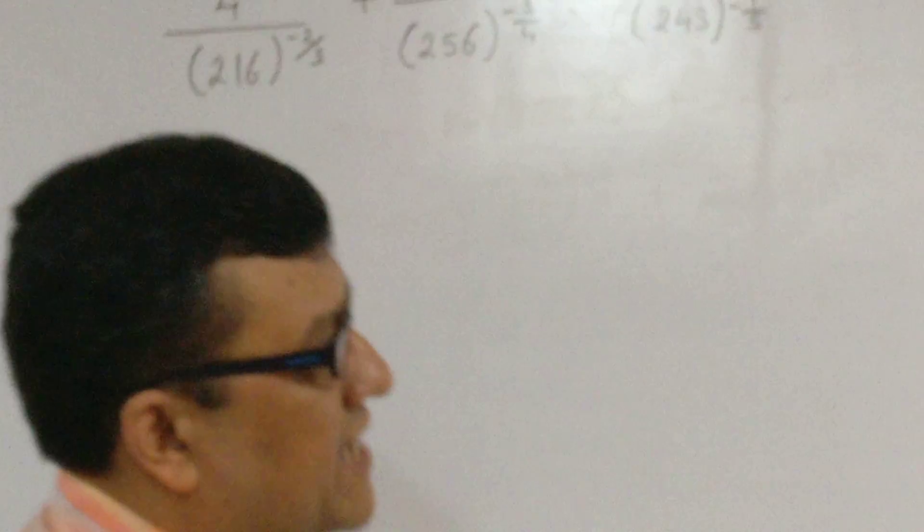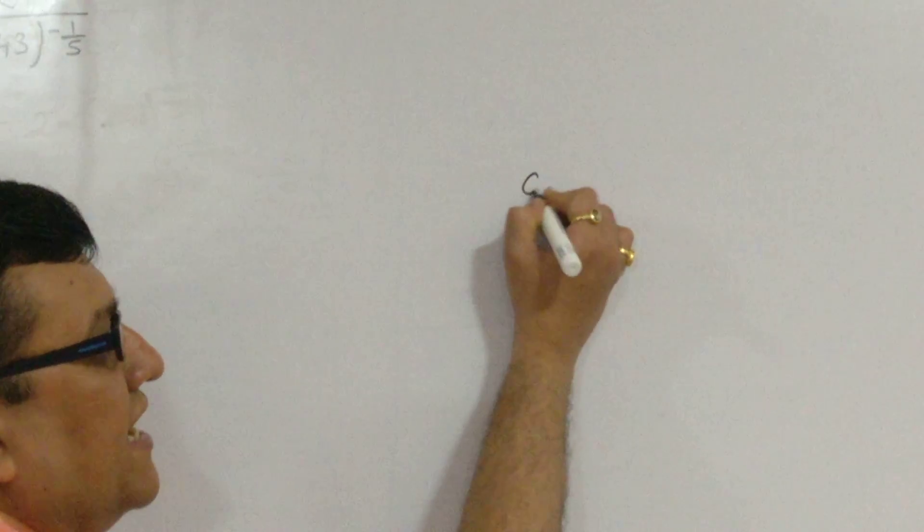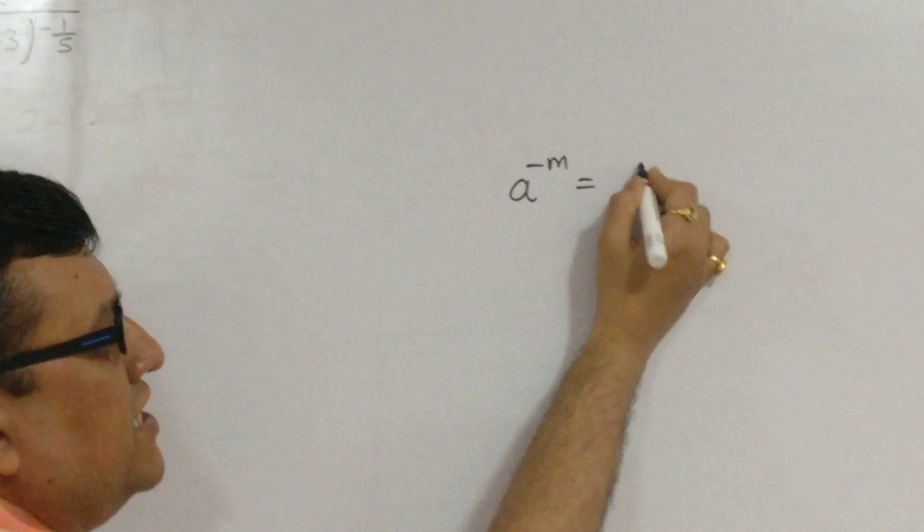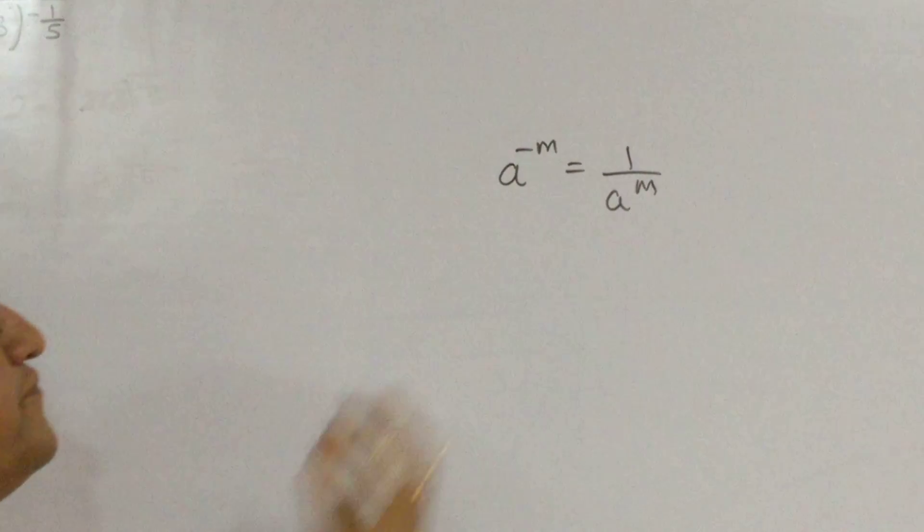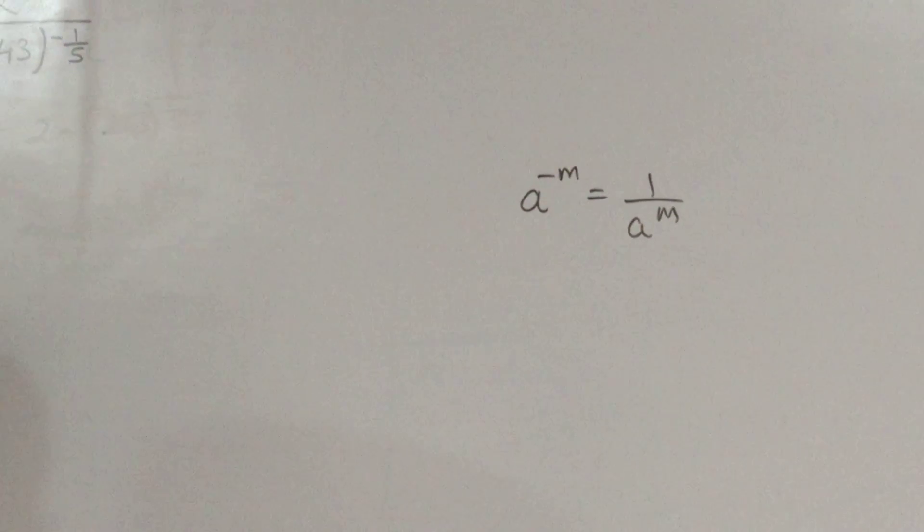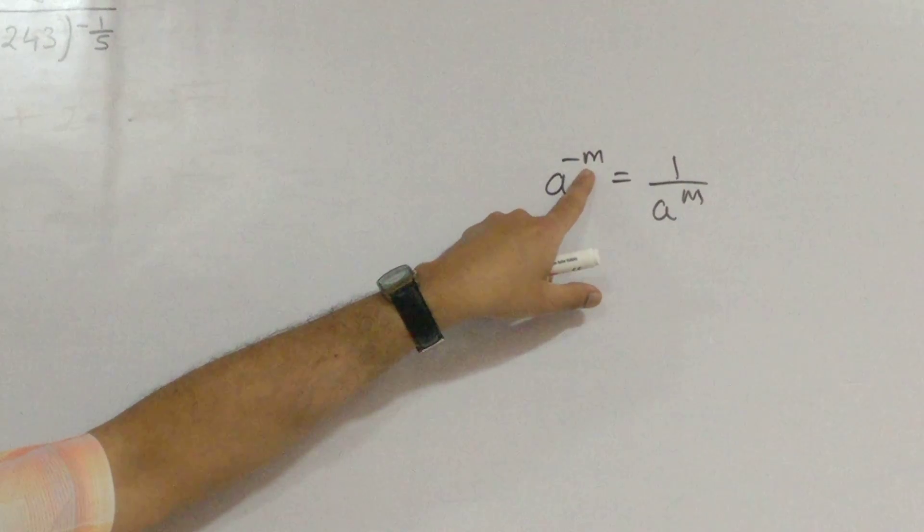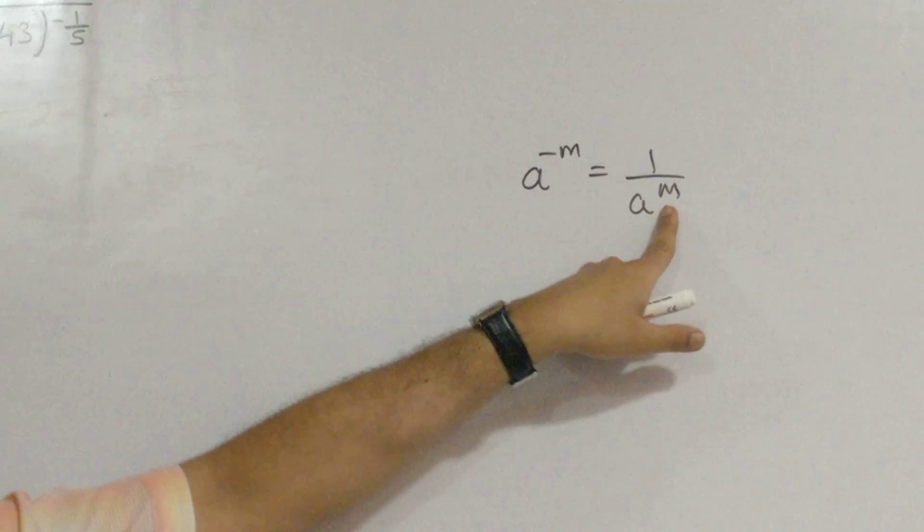Now in this particular sum, we have one of the law which says a raised to minus m is 1 upon a raised to m. If we have a negative power over here, by writing 1 upon, we get a positive power.